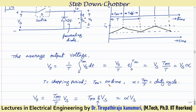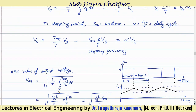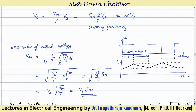T is the chopping period, T-on is the on-time, T-off is the off-time, and alpha = T-on / T is the duty cycle. The output voltage can also be written as T-on × F × Vs, which equals alpha × Vs, where F = 1/T is the chopping frequency. To control the output voltage, since supply voltage is constant, we can control either the on-period, the chopping frequency, or the time duration T.